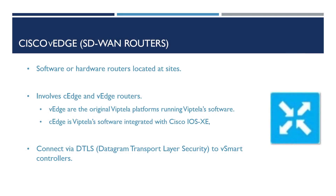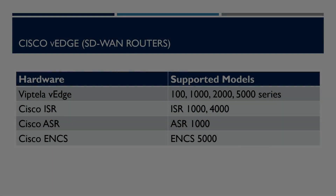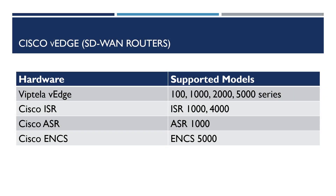Next up, the vEdge routers. These are the routers that sit at our branch locations and can be either software or hardware. There are two SD-WAN routers available that you might see mentioned: the vEdge and the cEdge. The difference between the two is that vEdge is the original Viptela platform that runs Viptela's code, and cEdge is Viptela software integrated with Cisco's IOS XE. The vEdge routers themselves will connect to the vSmart controllers via DTLS tunnels. There are a number of Cisco routers that support and can be utilised within Cisco's SD-WAN solution, however these devices must be running the SD-WAN specific IOS XE firmware.